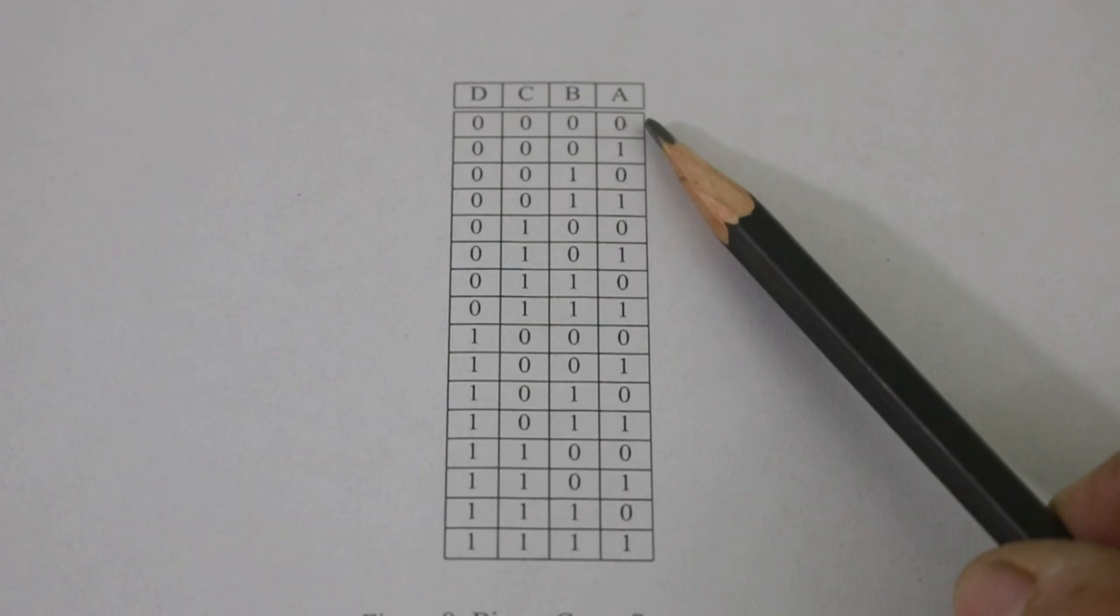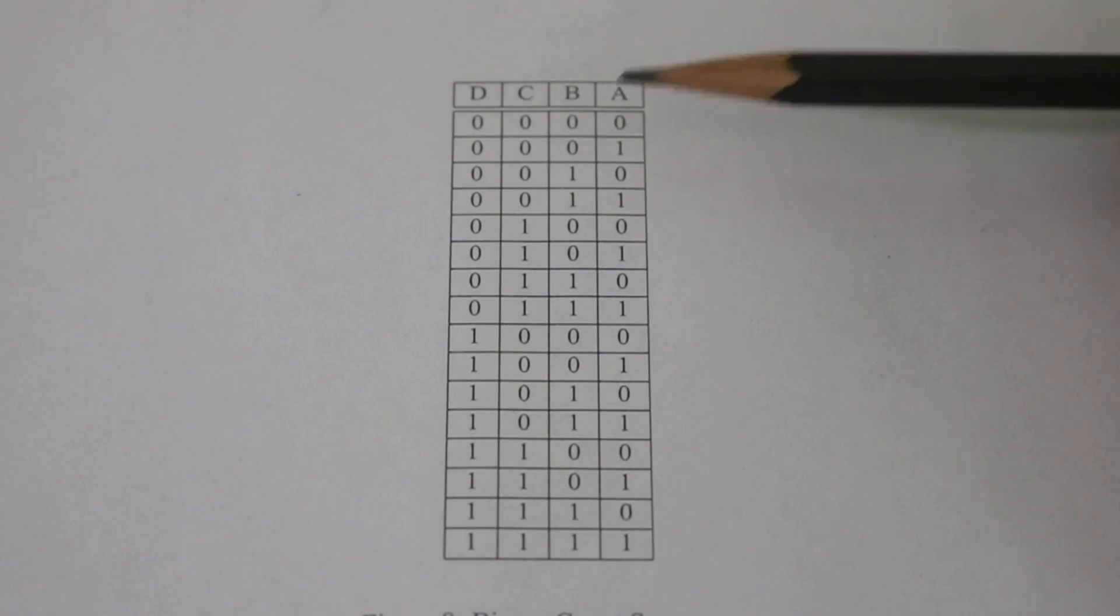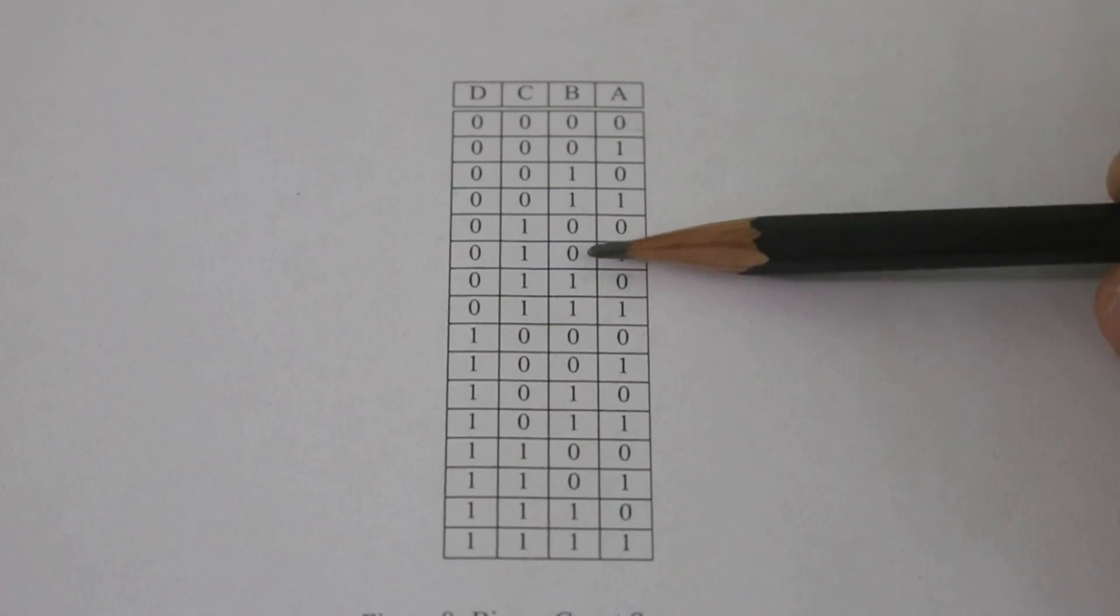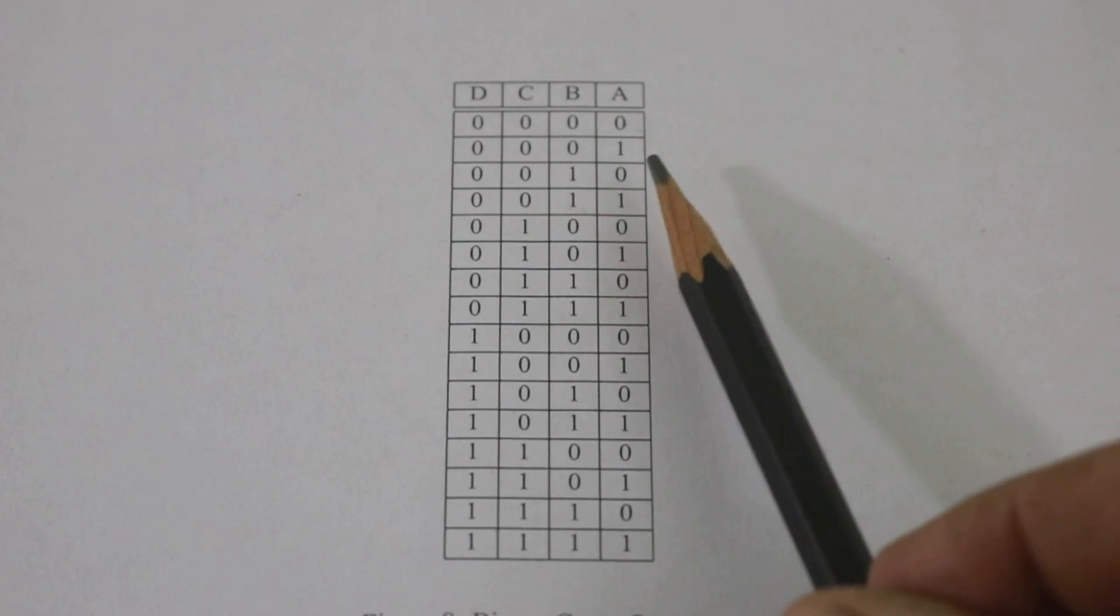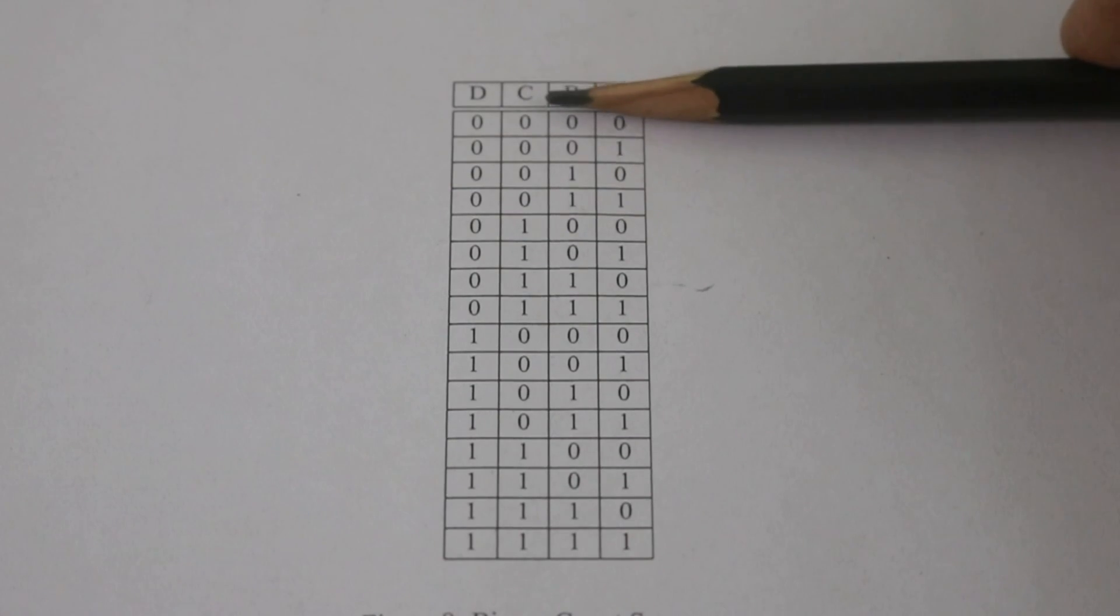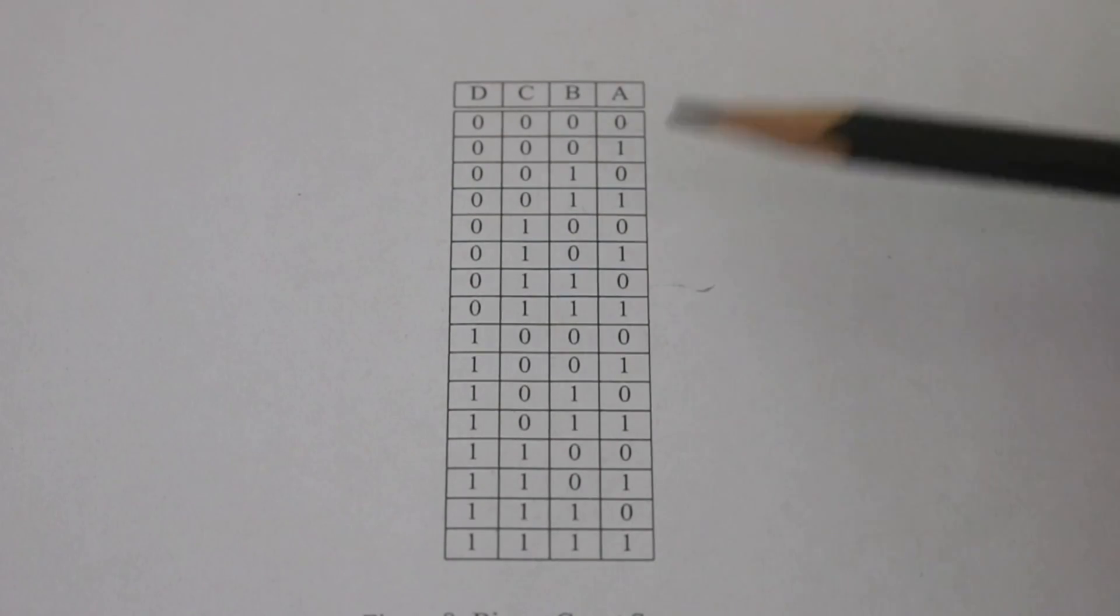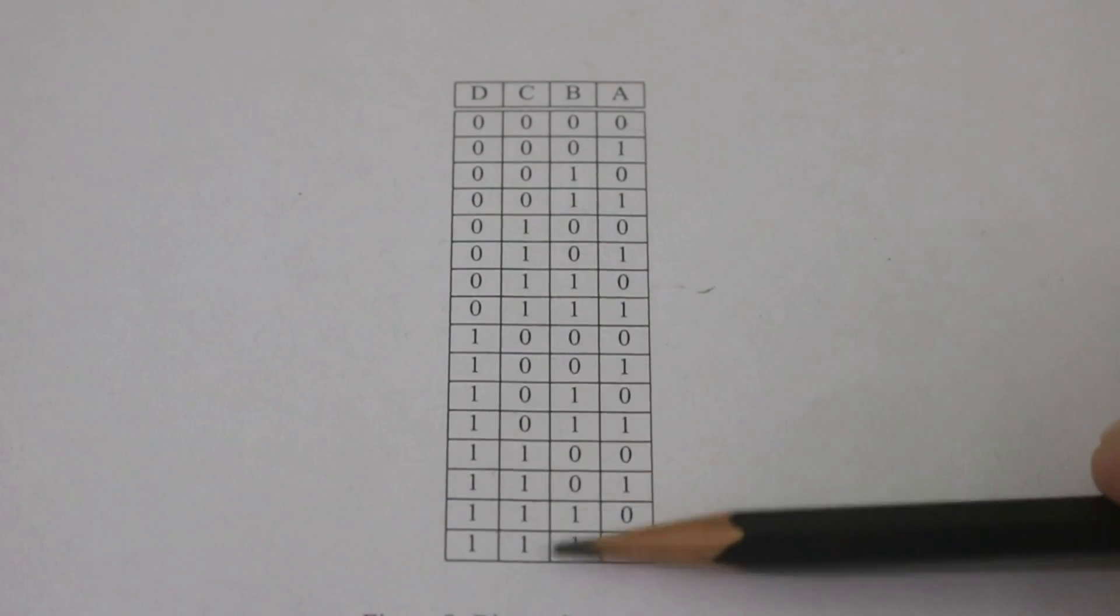Now if you go to the next significant digit, column B, you can see that you have 0, 0, 1, 1, 0, 0, 1, 1. You can see this as half the frequency of column A. If you now go to the third column C, again the frequency is halved, because you now have 4 0s, 4 1s, 4 0s, 4 1s.